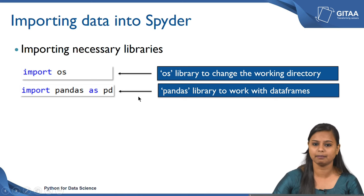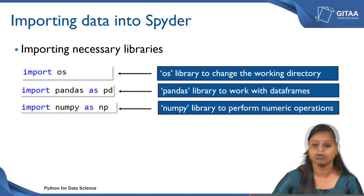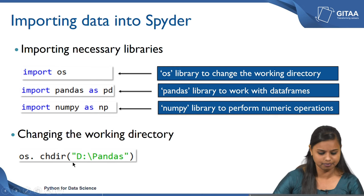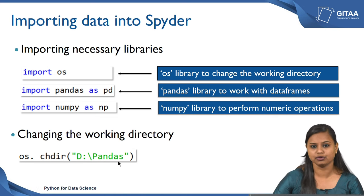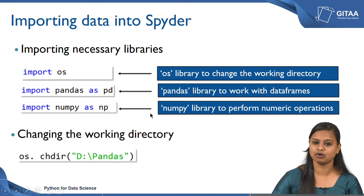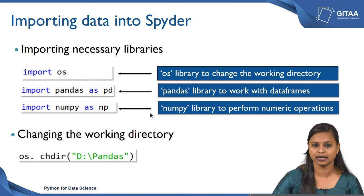We imported pandas to work with DataFrames. We are also importing the numpy library as 'np' to perform numerical operations. We use OS's 'chdir' function to set the path from which we can access the file. Inside the function I have specified my path where the data I am going to import is located — my data is in the D drive under the folder 'pandas'. This is how we change or set the working directory, and once set, we are ready to import data into Spyder.